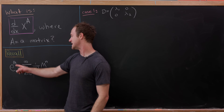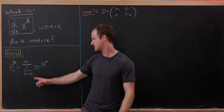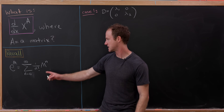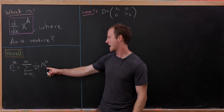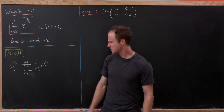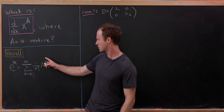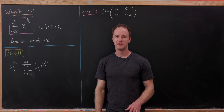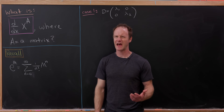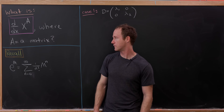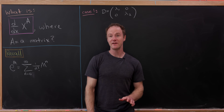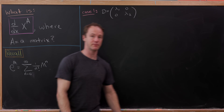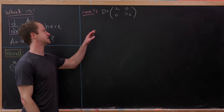The matrix exponential says e to the m, where m is a matrix, is the sum as n goes from 0 to infinity of 1 over n factorial times the nth power of m. The fact that we're taking the nth power of a matrix means we have to have a square matrix to start off with. We'll explore this with three examples, and they'll all be two-by-two matrices.